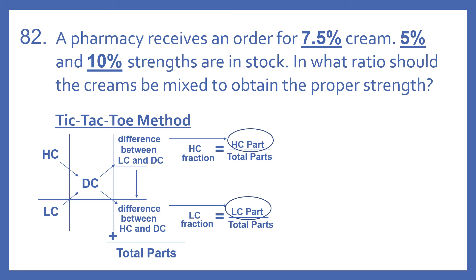Now if we look at the tic-tac-toe method, we have the high concentration in the upper left, the desired concentration in the very center of the tic-tac-toe grid, and the low concentration in the bottom left. We're going to subtract those diagonally to get the difference. The difference between the low concentration and the desired concentration goes in the top right box, and the difference between the high concentration and the desired concentration goes in the lower right box. We would add those to get the total parts, but here we only need the ratio.